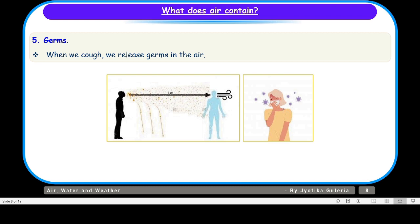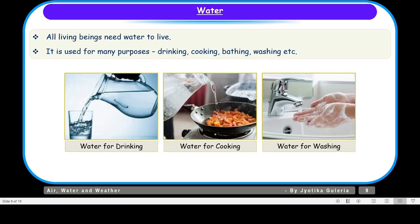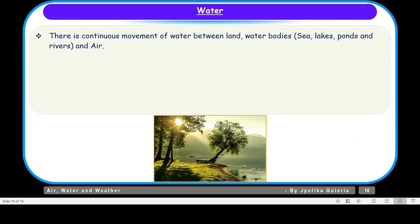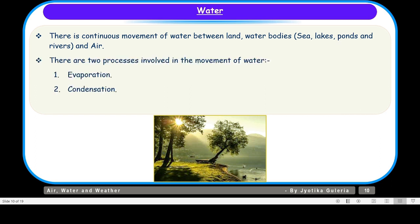Now we will move on to the second part, that is water. We know that all living beings need water to live, and water is used for many purposes like drinking, cooking or washing hands, and there are endless uses of water. Let us see the movement of water in nature. There is a continuous movement of water between land, water bodies and air — that includes the seas, lakes, ponds and rivers. Water undergoes two main processes: evaporation and condensation, and these processes occur continuously in nature.